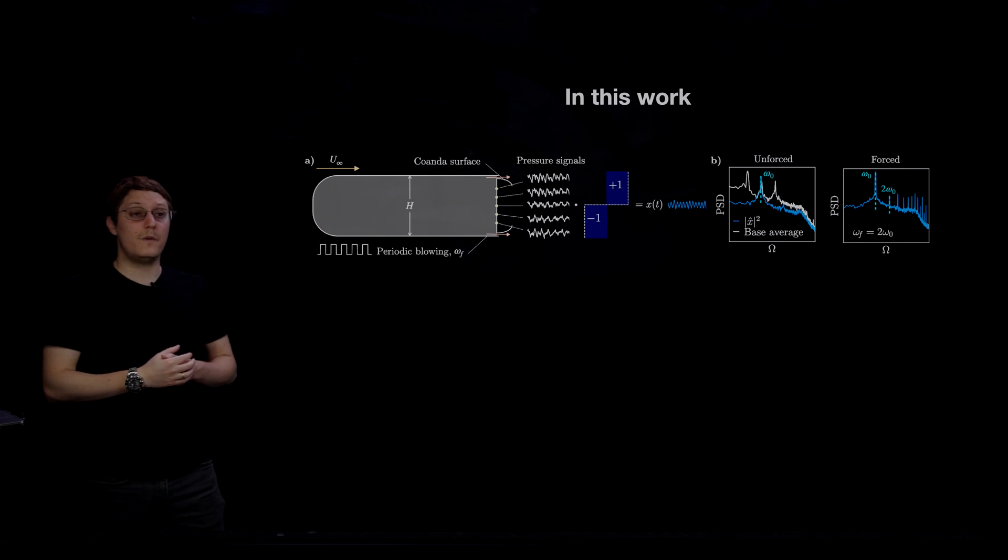And if we take a look at the power spectral density of x, we see one lonely peak located at the natural frequency, which we call omega zero. So this is the frequency of the unforced vortex shedding in the wake.